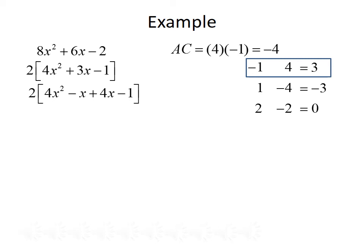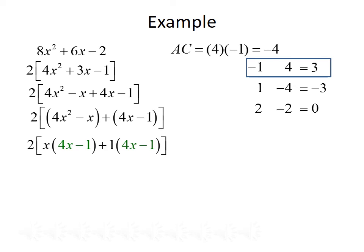We rewrite the trinomial as 2 times 4x squared minus x plus 4x minus 1. Grouping: the first group is 4x squared minus x, and the second is 4x minus 1. We factor x from the first group, giving x times 4x minus 1. We factor 1 from the second group, giving 1 times 4x minus 1. The common term 4x minus 1 can be factored out, giving us 2 times x plus 1 times 4x minus 1.